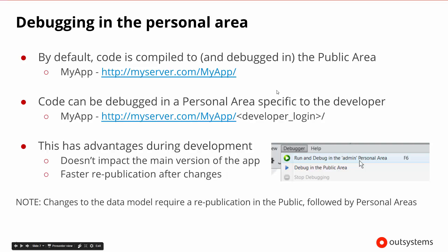You may have noticed that when we said we were going to start the debugger, it said start the debugger in the public area. By default, whenever we start the debugger, it will start debugging in the public area — that means it will debug the app where it's located on our server. So if the app's called MyApp, it'll be at MyApp.